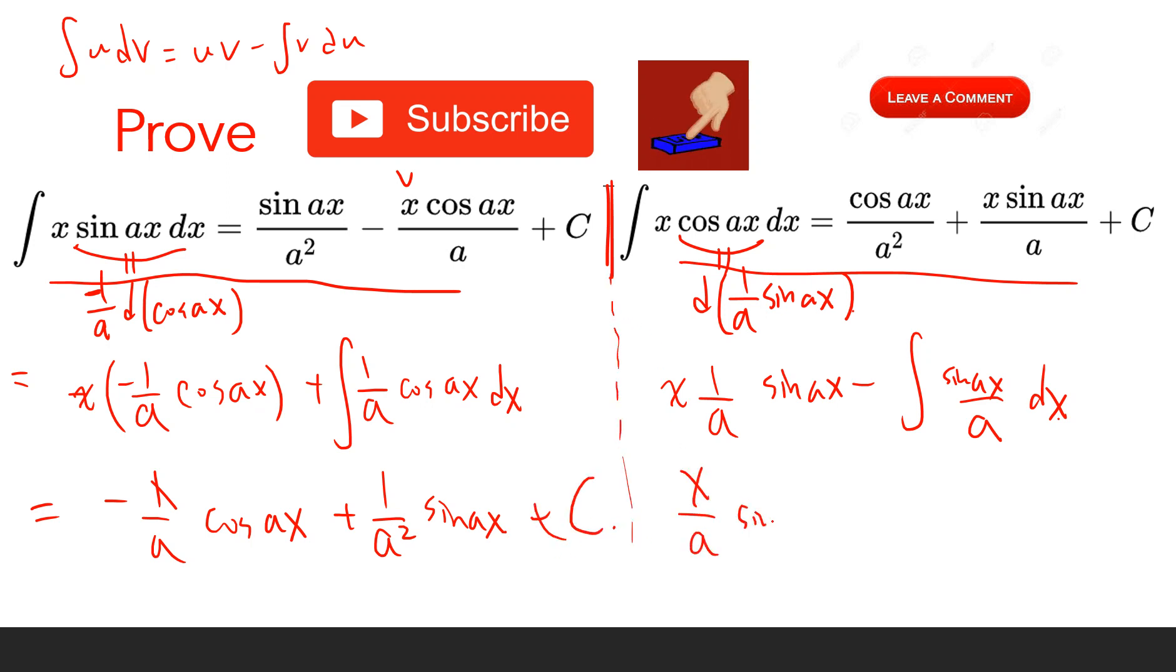For this second one, we have x/a sin ax minus the integral of 1/a sin ax dx. The integral of sine is negative cosine, giving x/a sin ax + 1/a² cos ax + C.